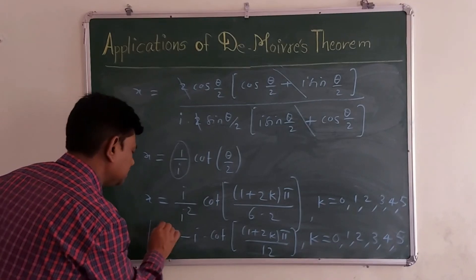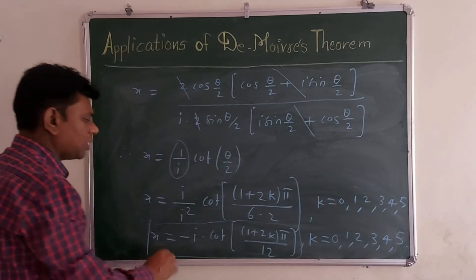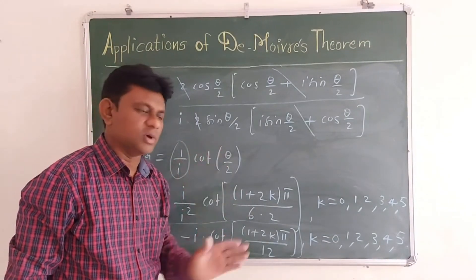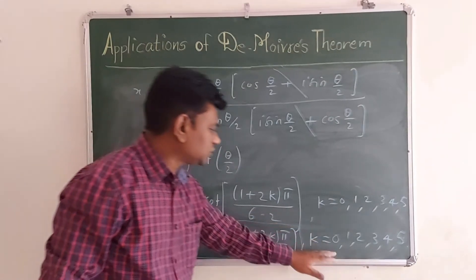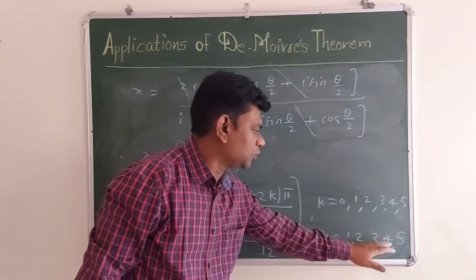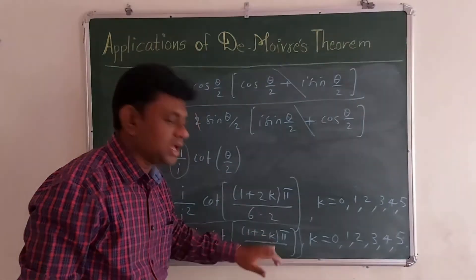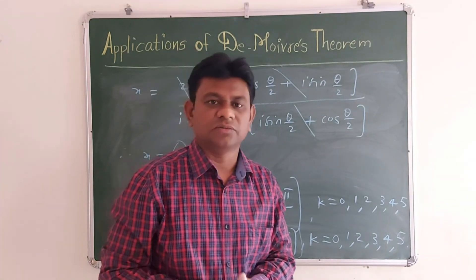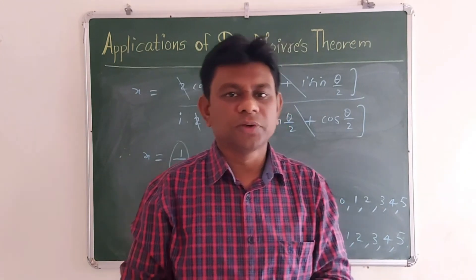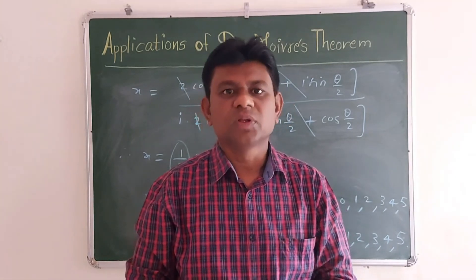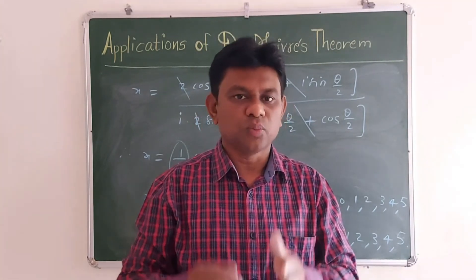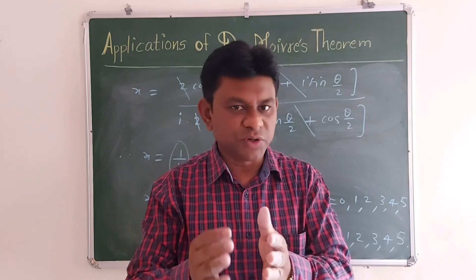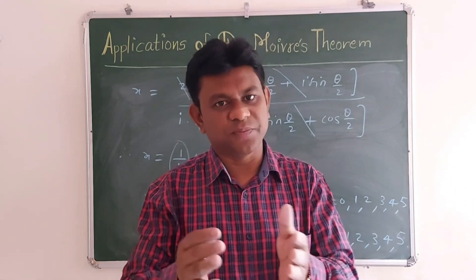Therefore, x = -i · cos((1+2k)π/12) is the required answer of the given problem. By substituting k = 0, 1, 2, 3, 4, 5 in place of k, we get all the required values of the given equation. Hope all of you have understood this problem. In the upcoming lecture, we will solve more problems based on De Moivre's theorem. Please subscribe to the channel and let me know your comments and feedback. Thank you.